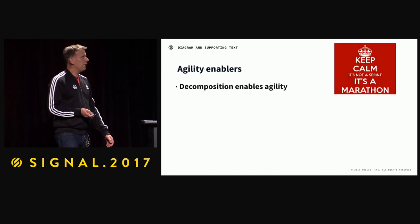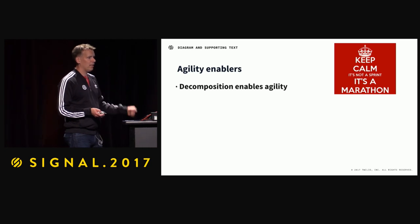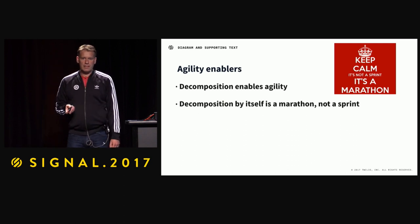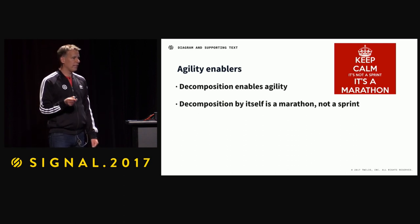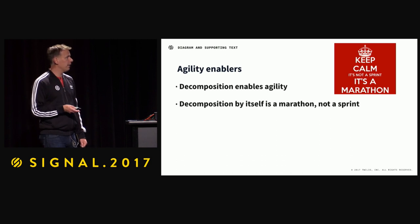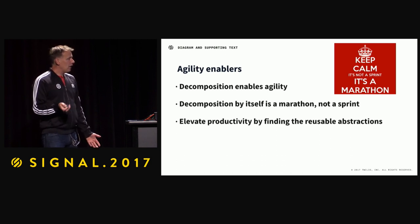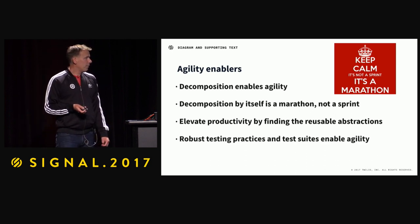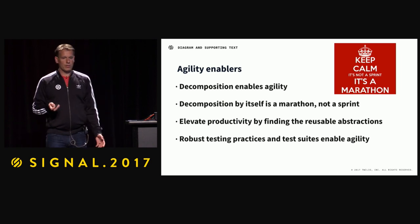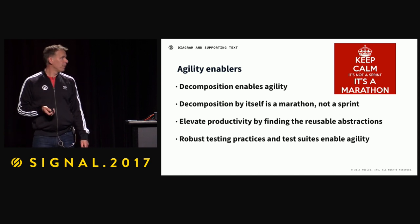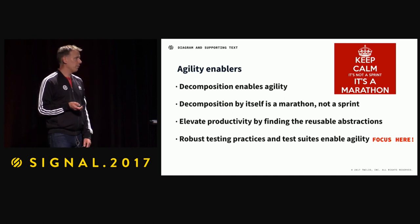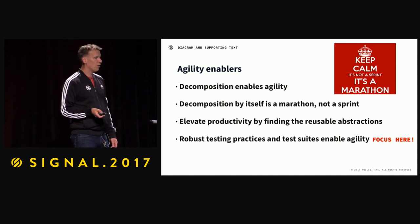To sum up agility enablers: decomposition by itself enables agility. Remember, though, that decomposition is a marathon and not a sprint — do it in iterations and do it safely. You can elevate your productivity by finding the right reusable abstractions. Robust testing practices are also super crucial to enable agility. If anything, start by having robust testing practices — that's going to speed you up the most over time.